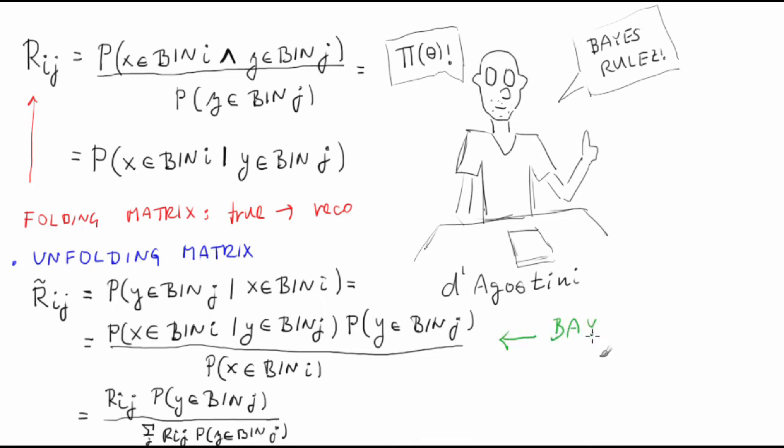Note that the second equality is the Bayes theorem, but we aren't in Bayesian statistics yet, because both x and y are random variables even in frequentist statistics. Also note that the probability for y to fall into a bin j is the truth spectrum.